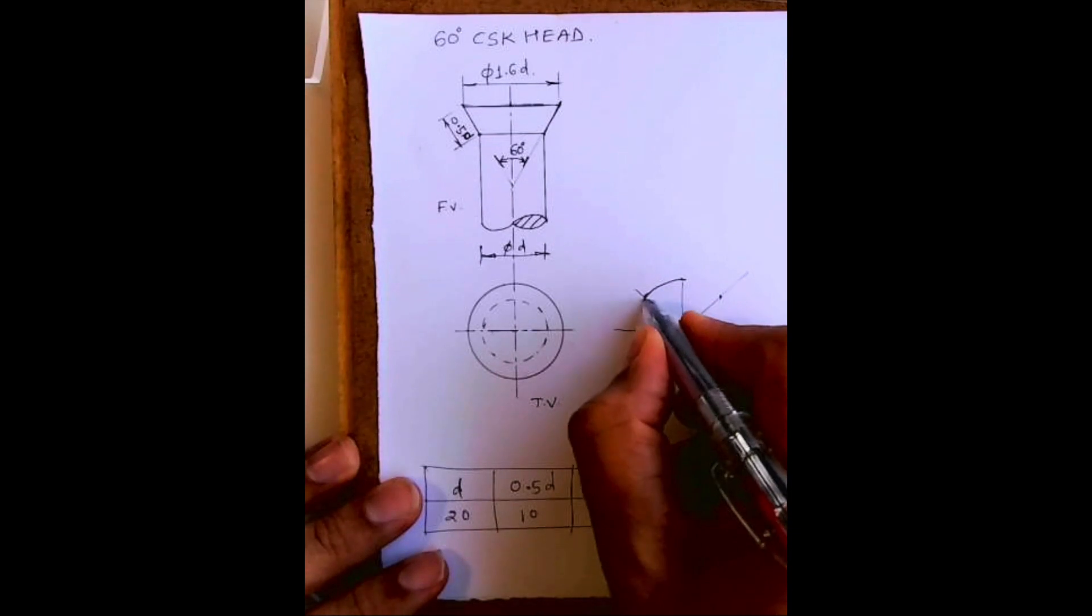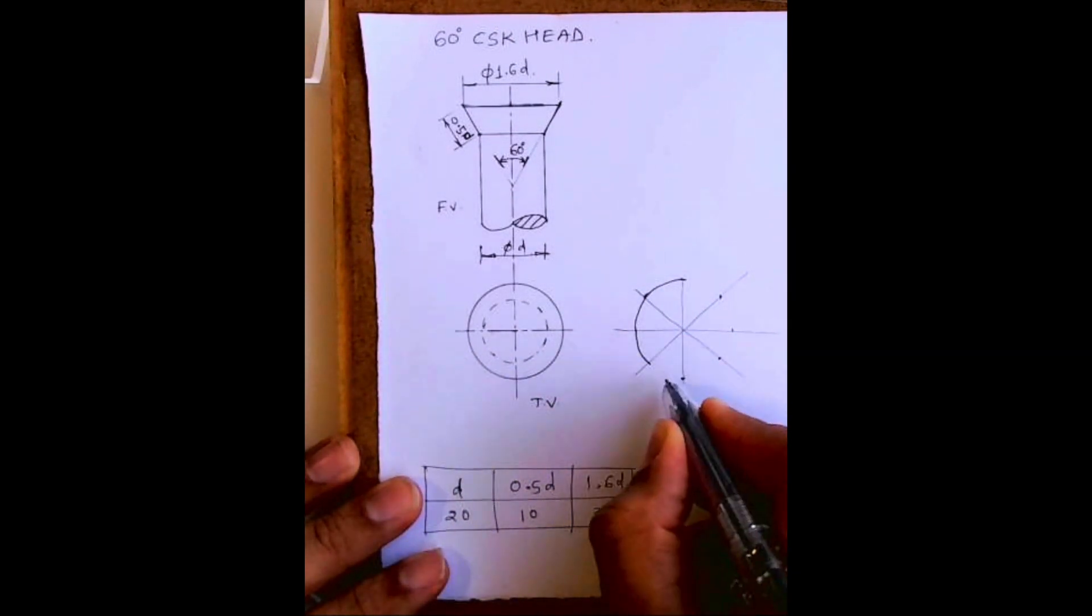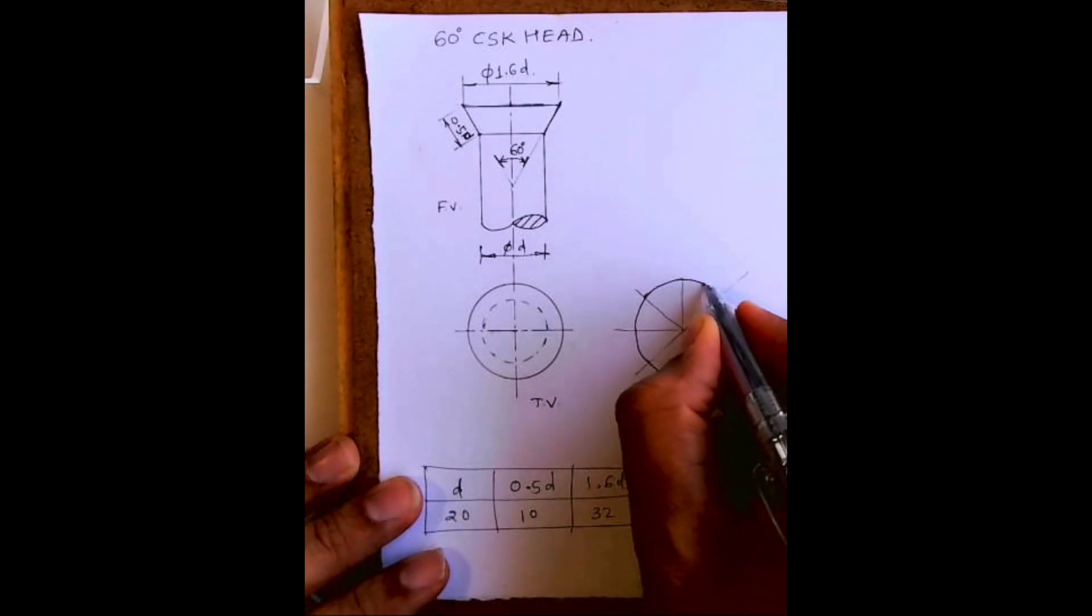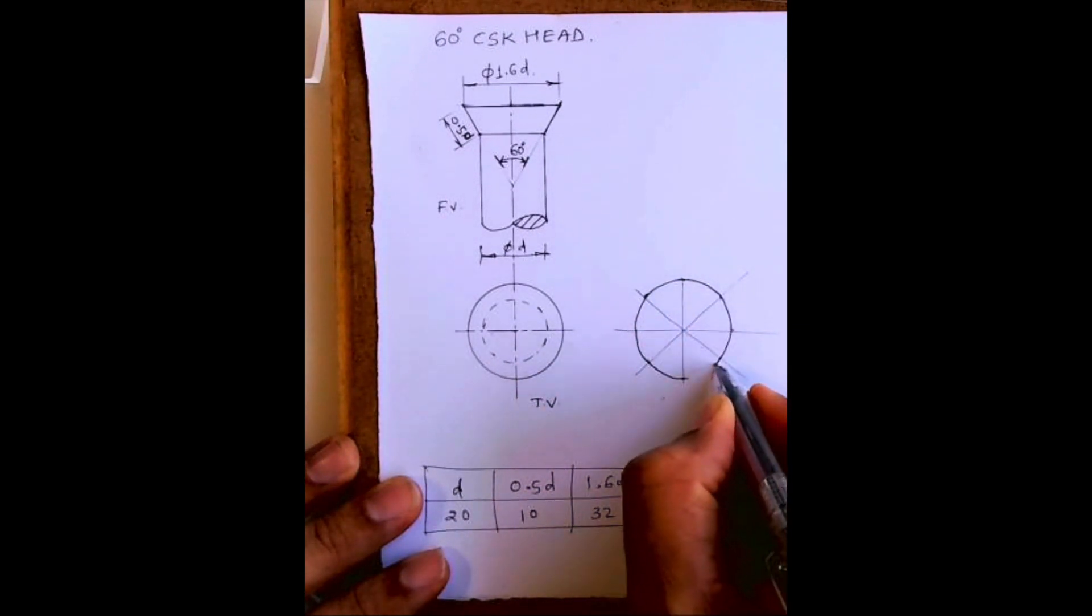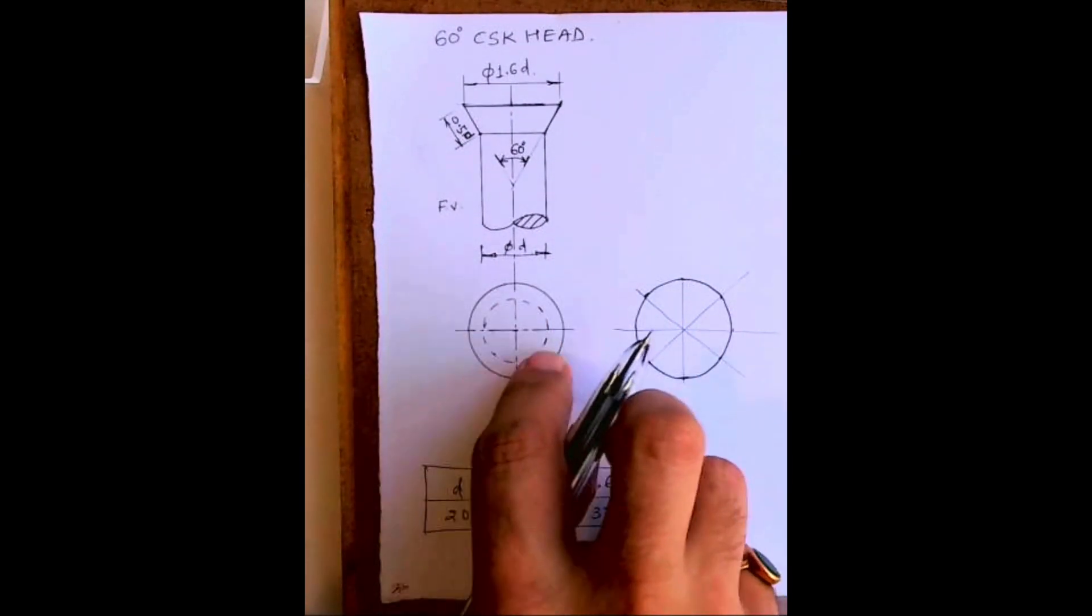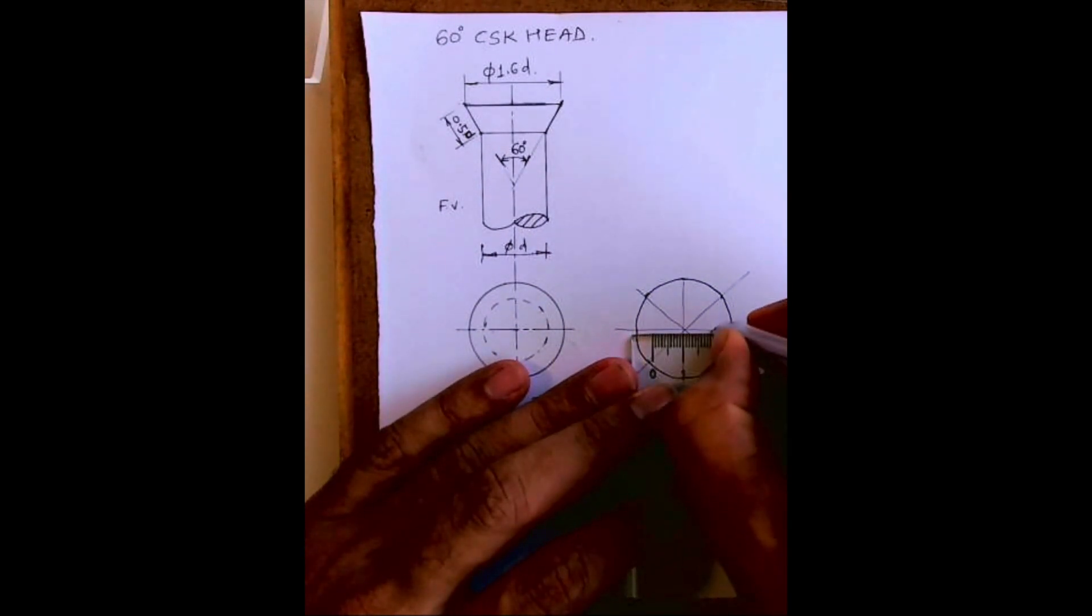And you draw a curve like this. This is how you will get the outer circle. Now the inner circle is how much?